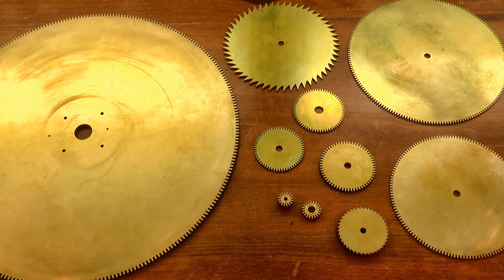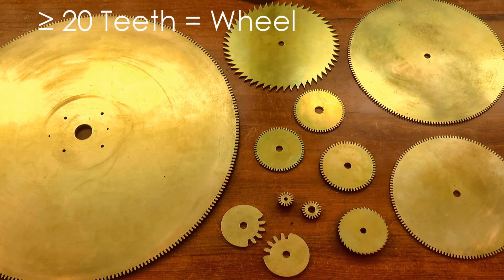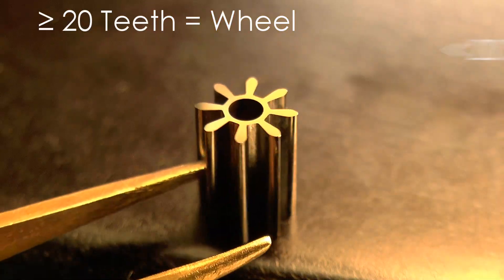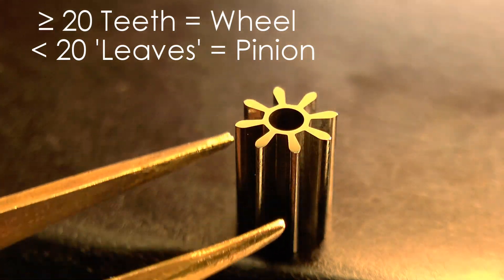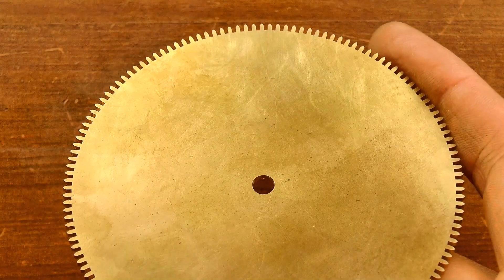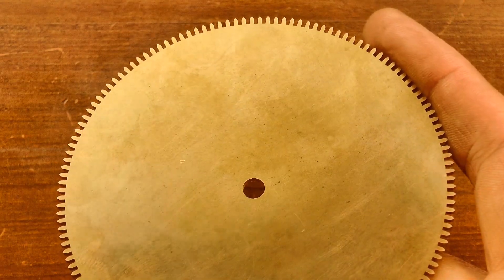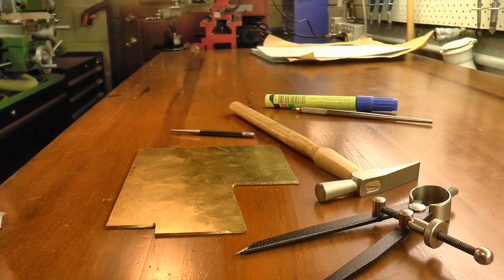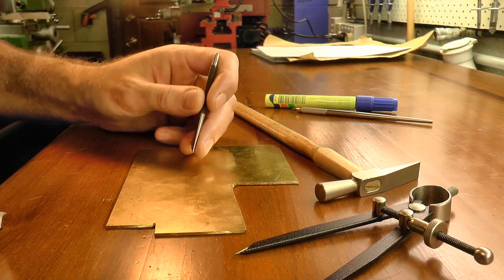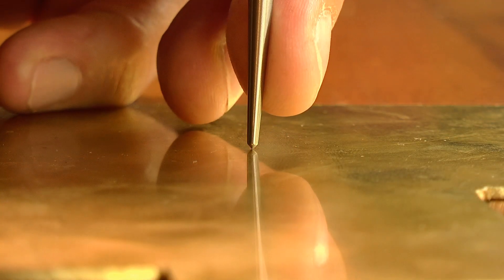As to why clockmakers call gears wheels, I haven't really found a good answer. But if it has 20 or more teeth, it's called a wheel, and if it has less than 20, it's called a pinion. Now rather than show the cutting of all the wheels for this clock, which I thought might be a bit tedious, I'm going to cover the process for this 144 tooth wheel as a representation of all of them, and then later in the video, I'll show you the differences for the others. So let's get into it.